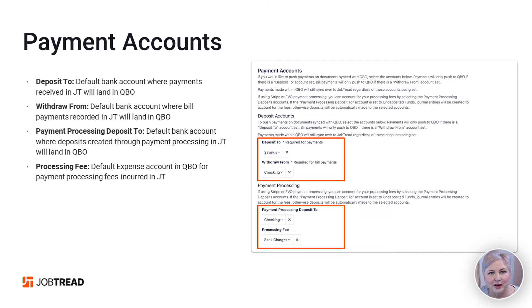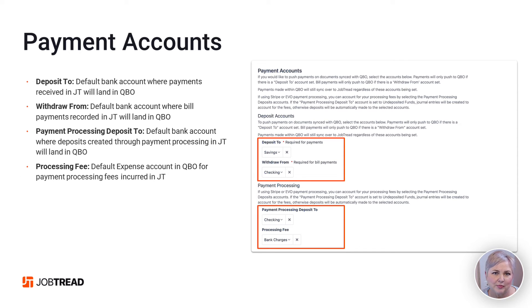Next, let's talk about the payment accounts. This is pretty straightforward — this is where you will map your default payment accounts between JobTread and QBO. For example, in Deposit To, if you record a payment received on an invoice in JobTread, what bank account do you want that deposit to show up in in QuickBooks Online? Withdraw From is the default bank account where bill payments recorded in JobTread will land in QuickBooks Online. If you use JobTread electronic payment processing, you'll select the bank account where you want those funds deposited in QuickBooks Online, as well as an expense account where you want that processing fee to land.